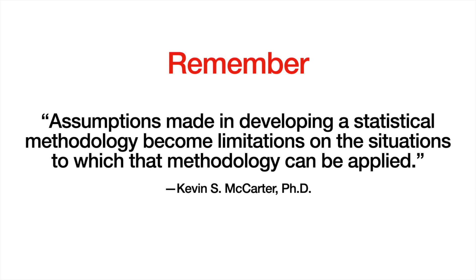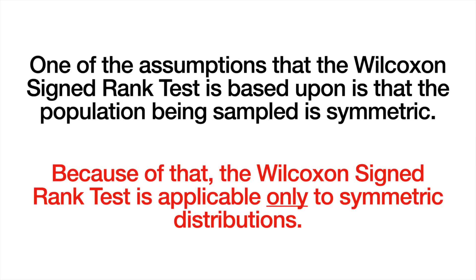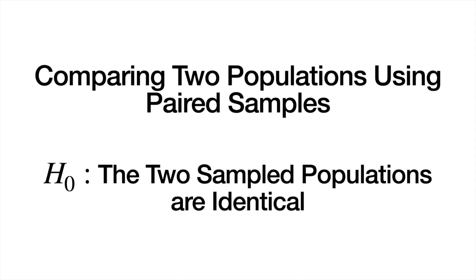The limitation of the Wilcoxon signed rank test — that the population being sampled must be symmetric — may seem restrictive, and perhaps even overly restrictive. But in this lecture, we're going to look at a situation where that problem essentially resolves itself. This is a very interesting and useful application of both the sign test and the Wilcoxon signed rank test — a situation where we're comparing two populations using dependent samples.